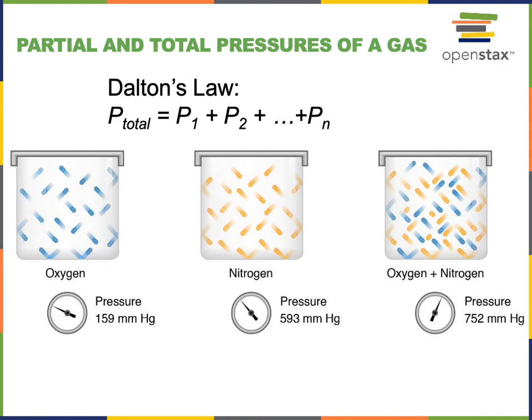Similarly, if we wanted to calculate the partial pressure of oxygen — if nitrogen and oxygen are the only gases in that mixture — we could just take the total pressure and subtract 593 to get 159 mmHg. Or we could multiply 752 by 0.21, because 21% of the air is oxygen. So the air is normally around 79% nitrogen and 21% oxygen; other gases are in much lower concentrations.